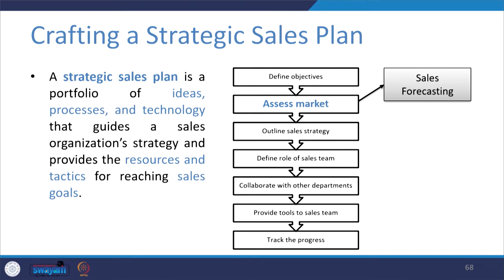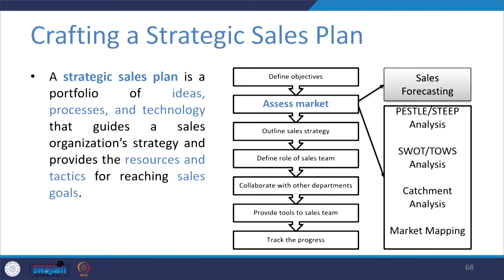Beyond that, there are more methods and tools available to gauge the market, so that we can take more informed decisions and devise the sales strategy with more accuracy, which is more beneficial and rewarding for a company. We can make use of tools like PESTEL or STEEP analysis, SWOT and TOES analysis, catchment analysis, and market mapping. Let us deep dive into these tools further and see what they exactly offer towards the benefit of a sales organization.